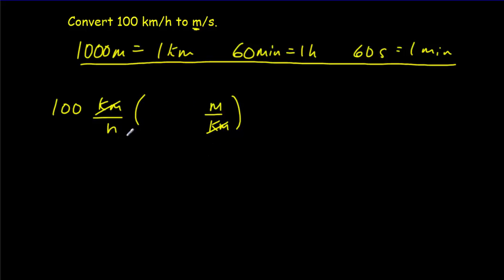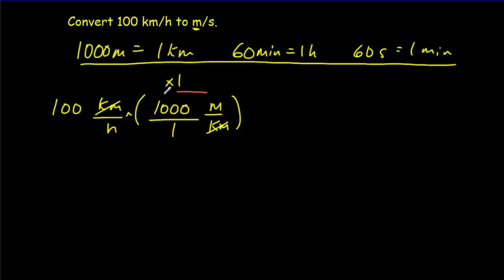Whenever I multiply, I'm not supposed to change the value of 100 kilometers per hour — I'm only supposed to convert it. If I multiply by something that has a value of one, I don't change the value. Anything with a numerator equal to its denominator has a value of one. Since a thousand meters equals one kilometer, my numerator equals my denominator, and I'm multiplying by one.